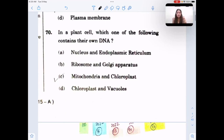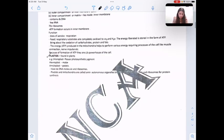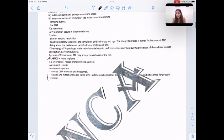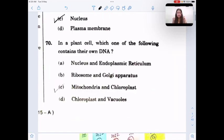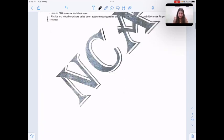In plant cell wall, which one of the following contains their own DNA? Plastids and mitochondria, chloroplasts are a type of plastid, they have their own DNA and ribosomes. Mitochondria and chloroplast are the ones which have their own DNA as well as proteins.